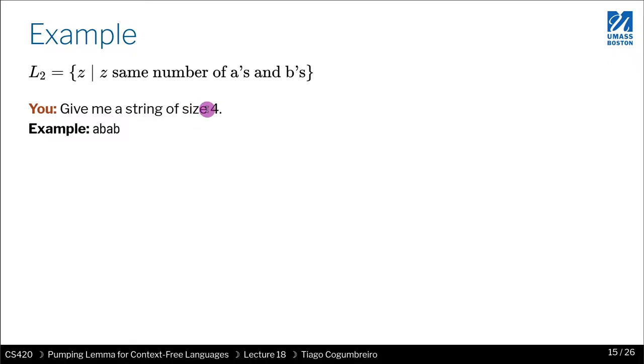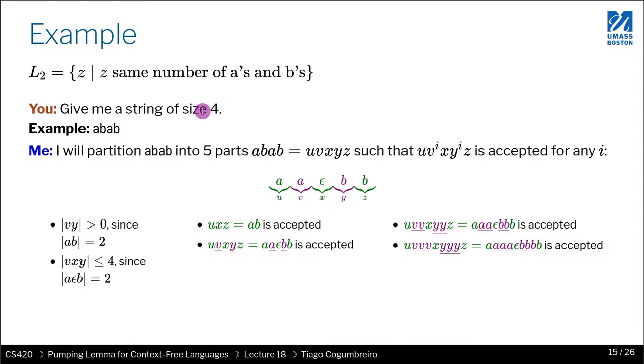So in this case, the pumping length is four. And if you give me a string of at least four letters, it can be pumped. And it will be pumped in this way. So it's the middle that is being pumped. And actually, the x could be empty. In this case, it is empty. What we're doing is we're replicating a's and b's, and the pumped strings are all in the language L2.